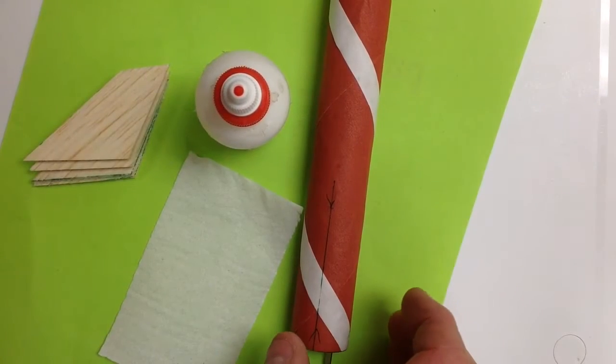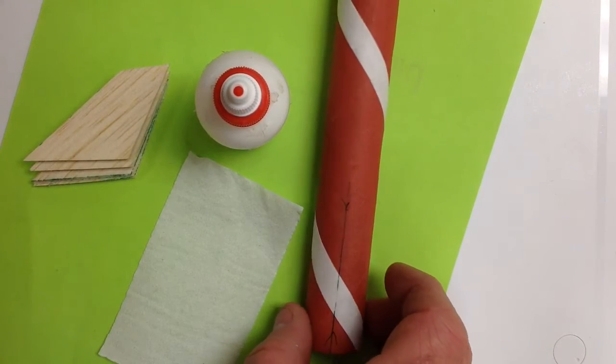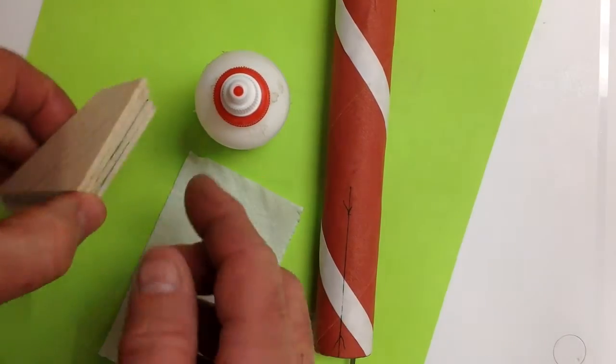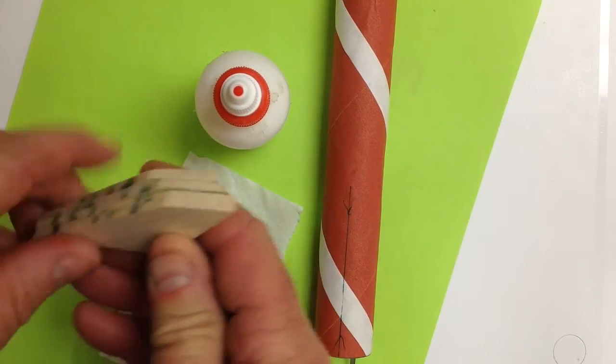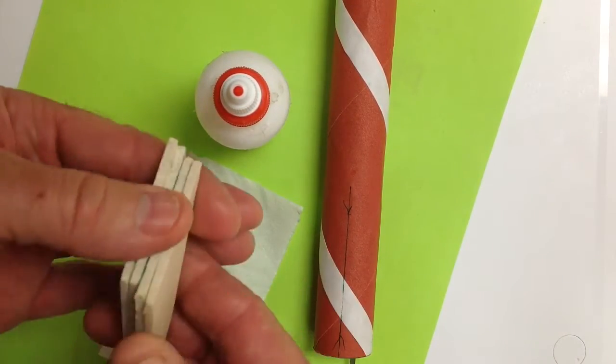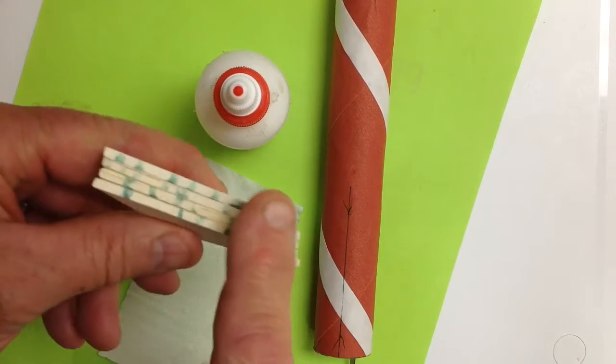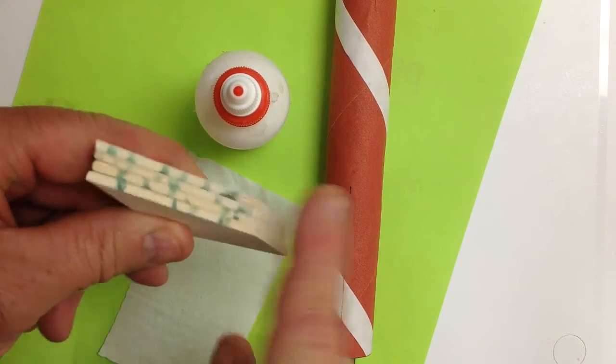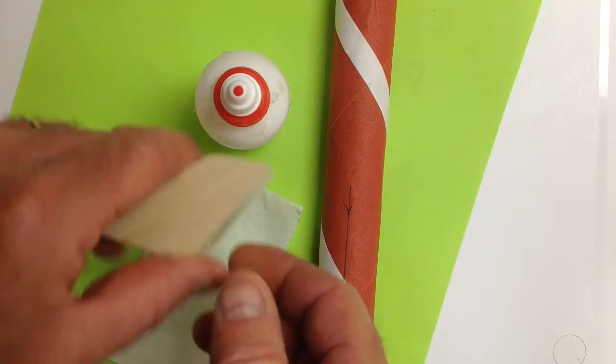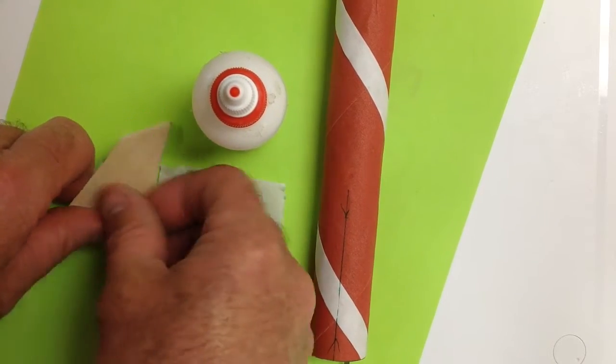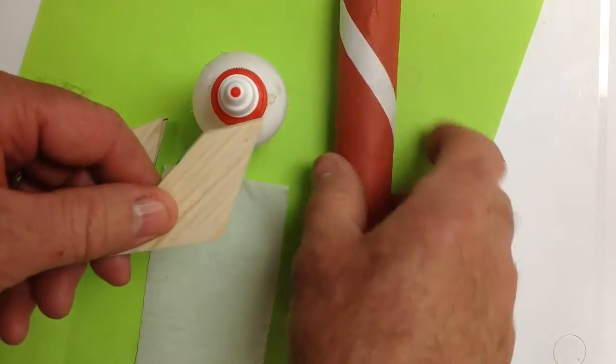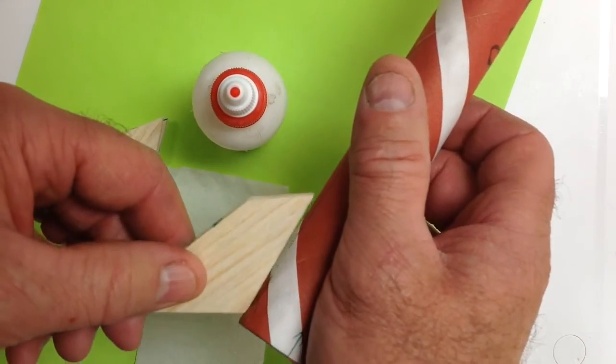The next step now is gluing your fins onto your rocket. Line up your fins so that you have the same edge all the way around. Remember, this is the edge that you didn't cut or file. I'm going to glue my fins on with this edge here so it's going to go on like that.